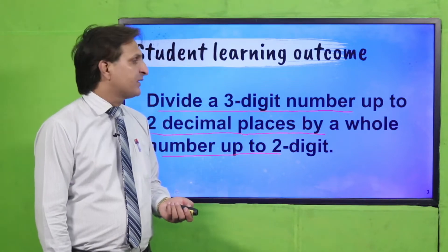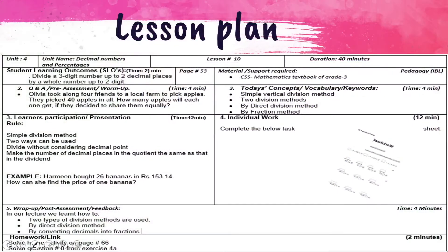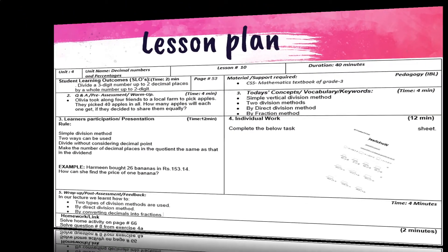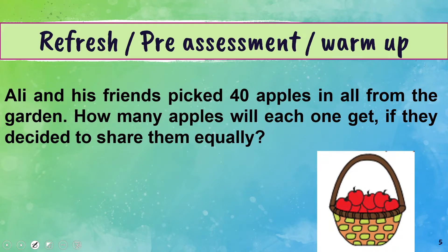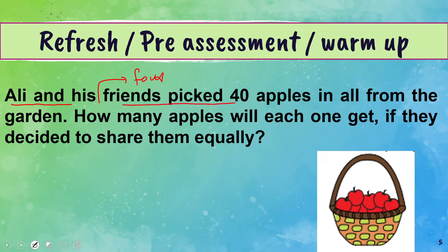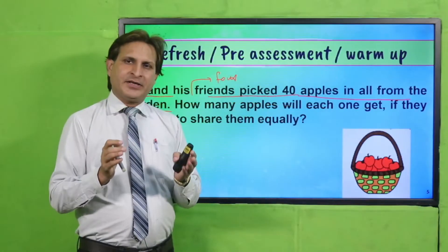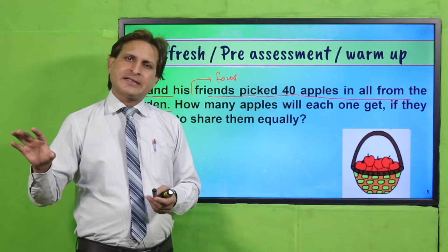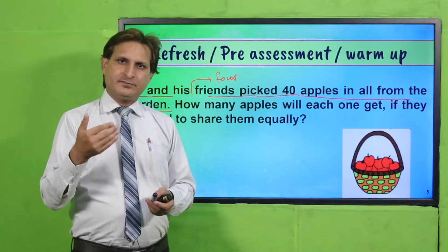Aajaayen lesson plan ki taraf. Teachers, lesson plan hamare description box mein se download kar sakti hain. Pre-assessment ki taraf chalte hain. Observe karein — har student ne is statement ko wall se dekhna hai, read karna hai, aur find karna hai. Ali and his four friends picked 40 apples in all from the garden.